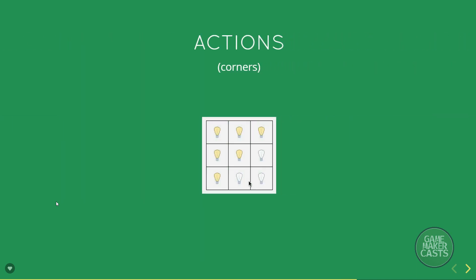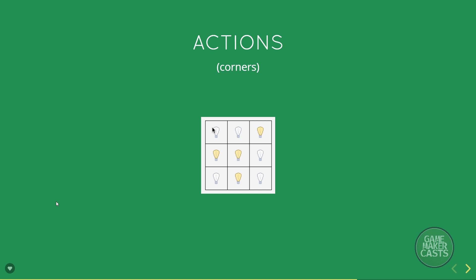Now if we take a look at some of the corners, we're going to have to include some logic because we can't turn lights on or off if no light is existing above or below, left or right of those corners. So we're going to have to handle that in our code.